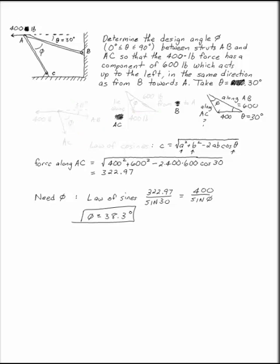Two struts AB and AC are loaded with a 400-pound load at A, as shown. You want to find the design angle phi between the struts AC and AB, where, in this case, theta is 30 degrees, so that that 400-pound load has a 600-pound component acting along AB.